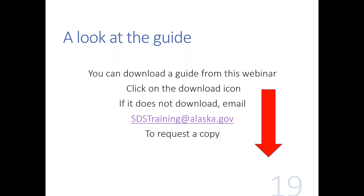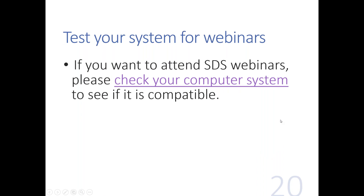You should download the materials from this webinar — click on the download icon. If you are unable to download it, email us at sdstraining@alaska.gov and request a copy. You can also ask questions within the webinar by clicking on the little bubble; just give us a day or two to get back to you. This is a recorded webinar, but we do collect your questions and are happy to answer them. In your materials there's also a link to test your computer system to see if it is compatible with our webinars.